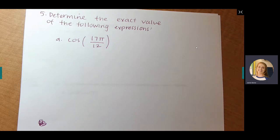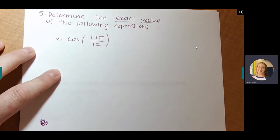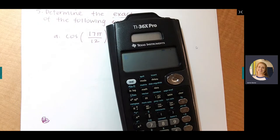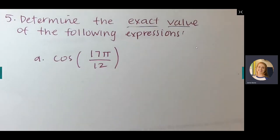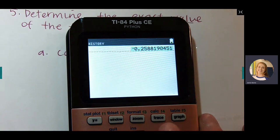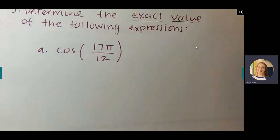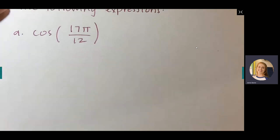Anytime you see these directions — determine the exact value — this calculator is going to be super helpful. If you have this calculator, you can just pop in the expression and it's going to give you the answer. But I'm going to show you how to do this by hand if you're using your graphing calculator. The TI-84 Plus CE cannot give you an exact value — it's going to give you a decimal answer. So if you have a graphing calculator, that's totally fine, you can do this by hand.